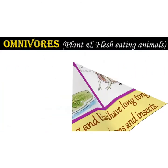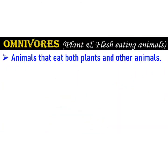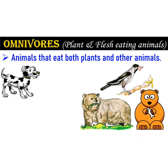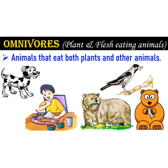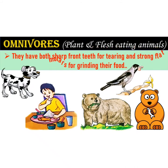Next is omnivorous: animals that eat both plants and other animals are called omnivorous. Dogs, crows, bees, and human beings are examples. They have both sharp front teeth for tearing and strong flat molars for grinding their food.